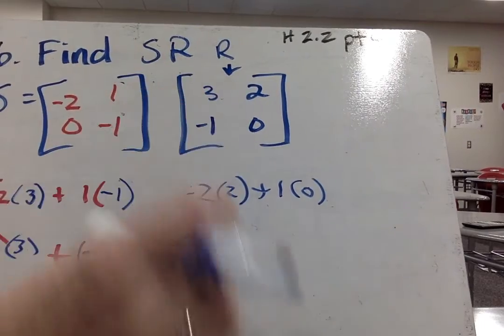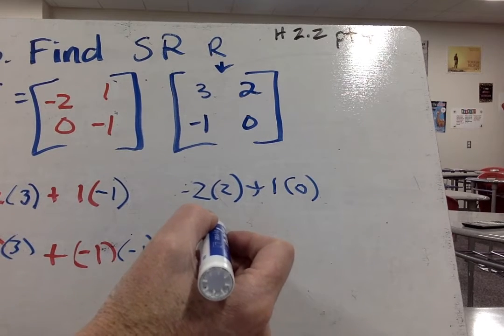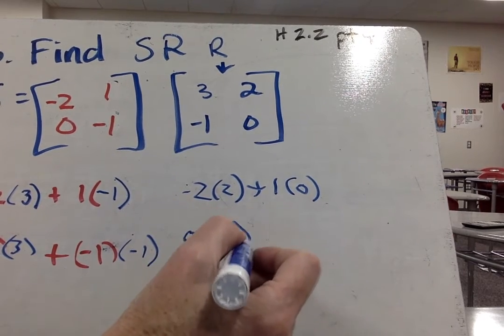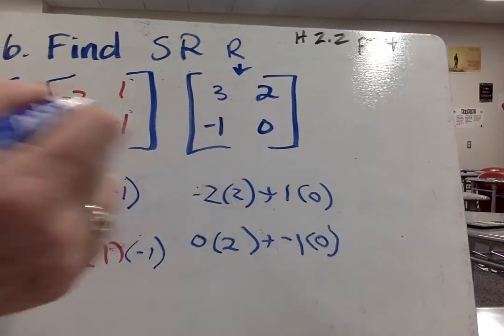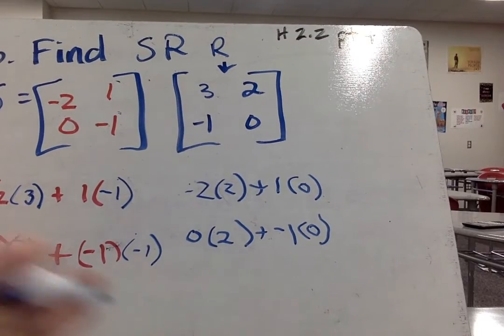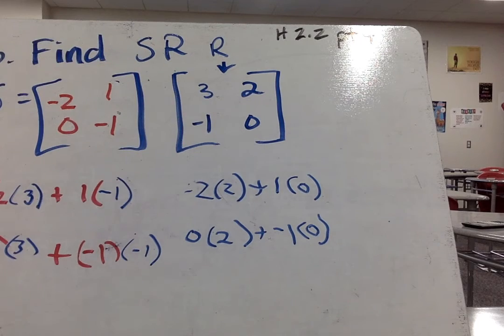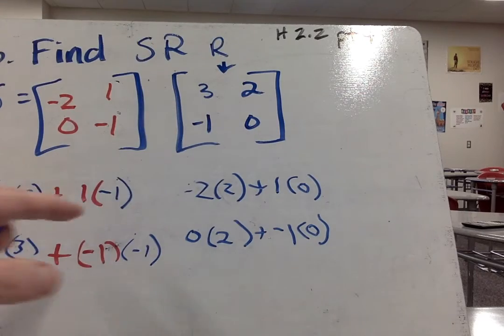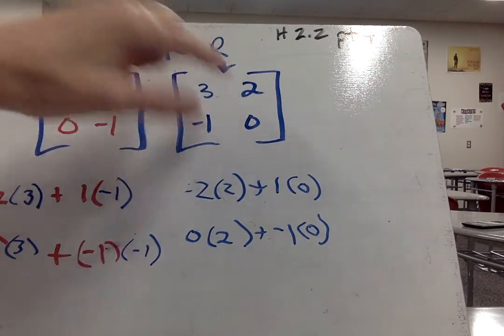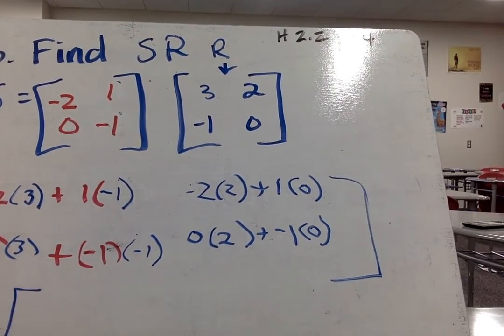Now we do second row, second column. Second row times first column, that's these two. First row, second column, that's this one. Second row, second column, that's this. So I'm going to go ahead and add those together and get our final answer.